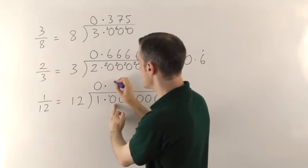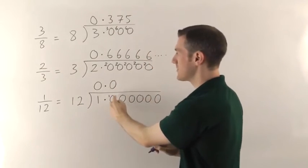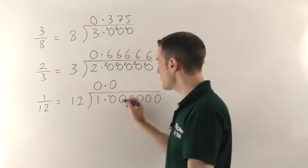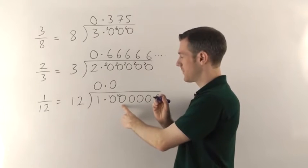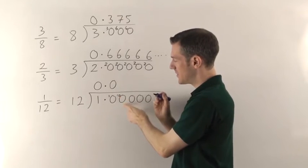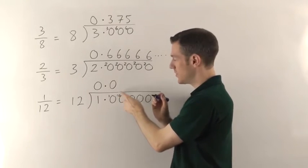12s into 10 still goes 0. So you put the 0 and this time the remainder is the full 10. And you do have to write all of that 10 next to the next digit here. So that's a 10 up there with a 0 makes it into a 100. Yeah 100 is 100.